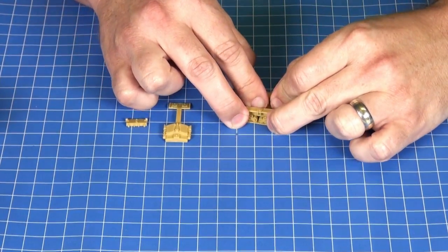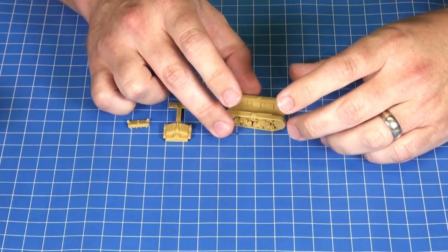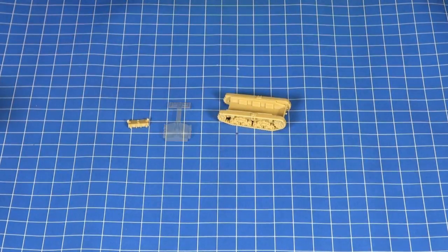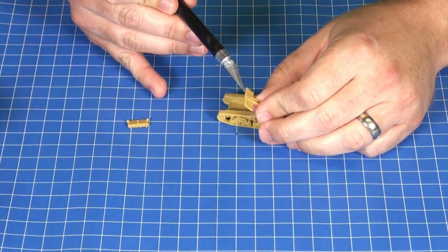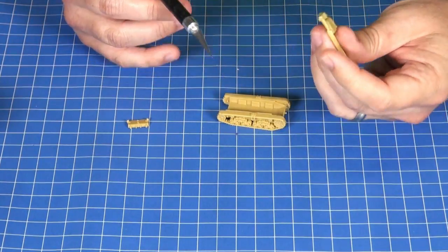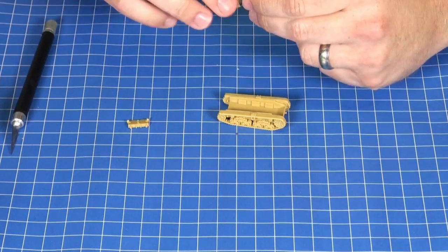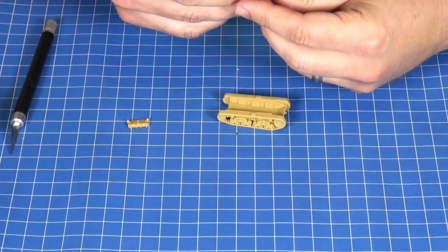Just make sure it sits nicely on the table, and then we can move on to attaching the upper hull. You want to make sure that you've given the plastic sprue feeds a good clean. If you haven't, that'll stop the pieces sitting together nicely once you've glued them.